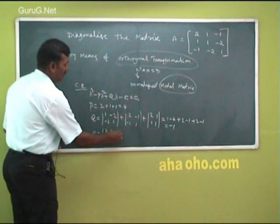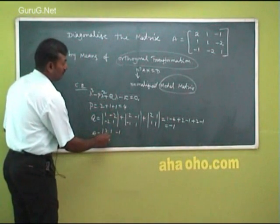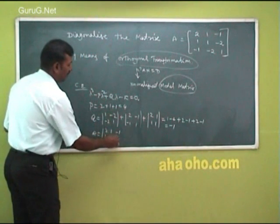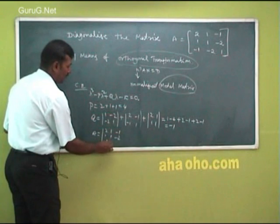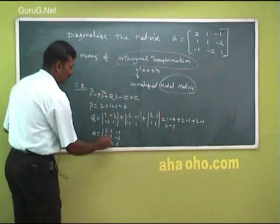So R is the determinant of A: the matrix 2, 1, -1; 1, 1, -2; -1, -2, 1.